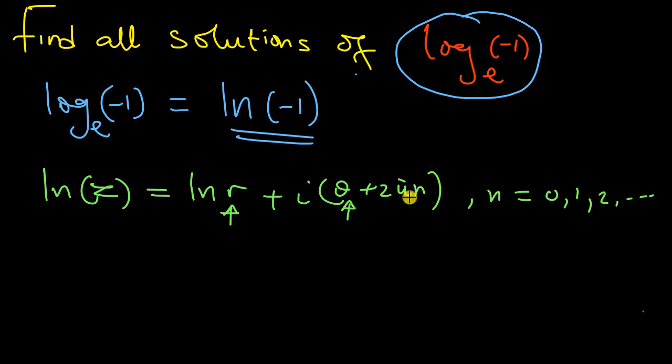And n is 0, 1, 2, and so on. This represents the general argument of the complex number. So instead of writing this as negative 1, I'm going to write it as z equals negative 1 plus 0i. Now you can see this is a complex number.